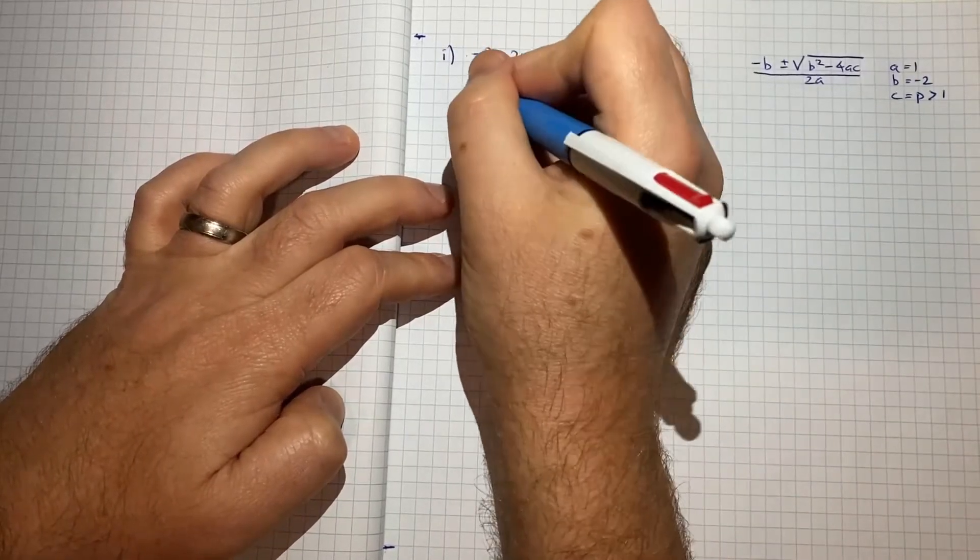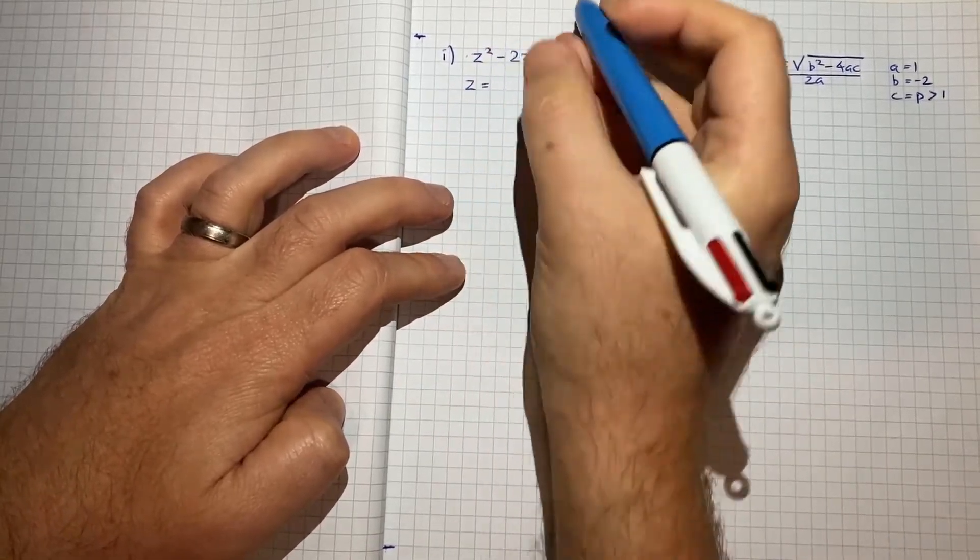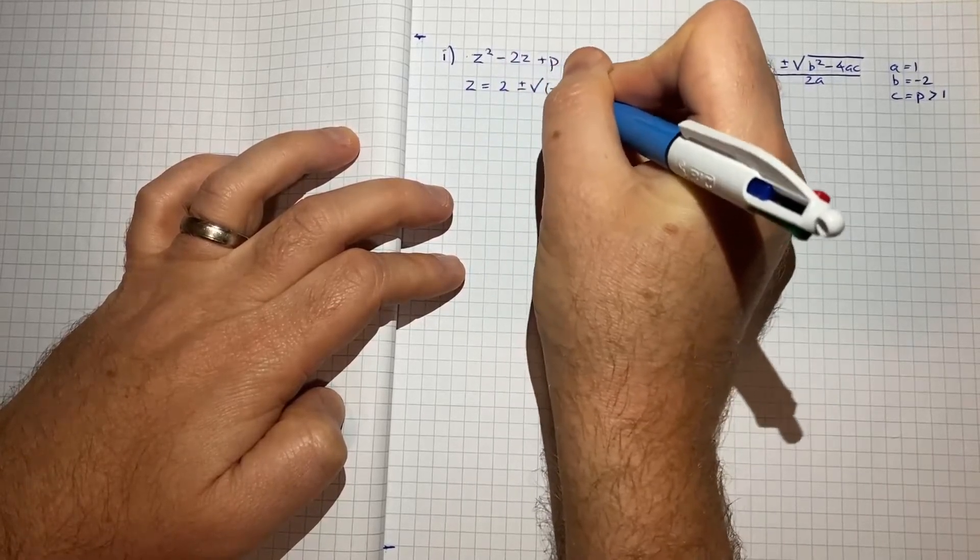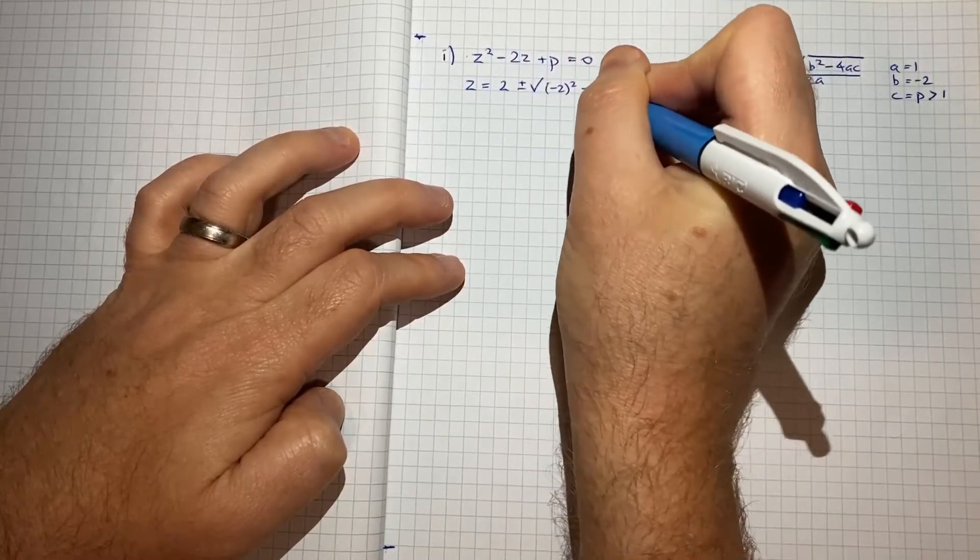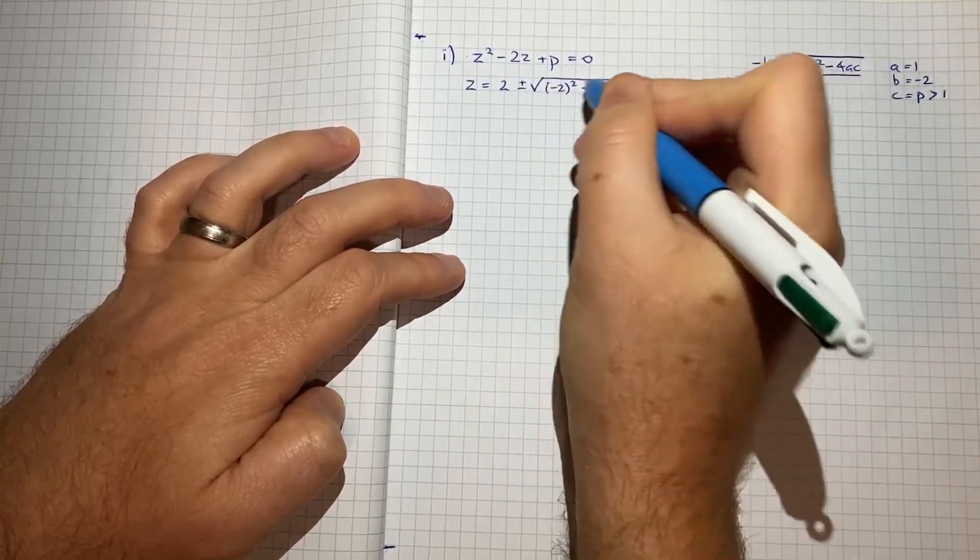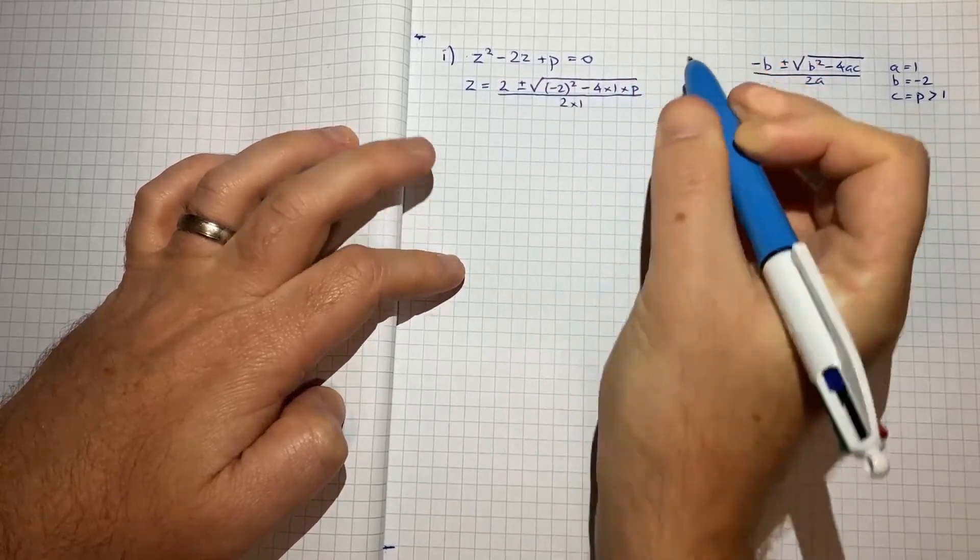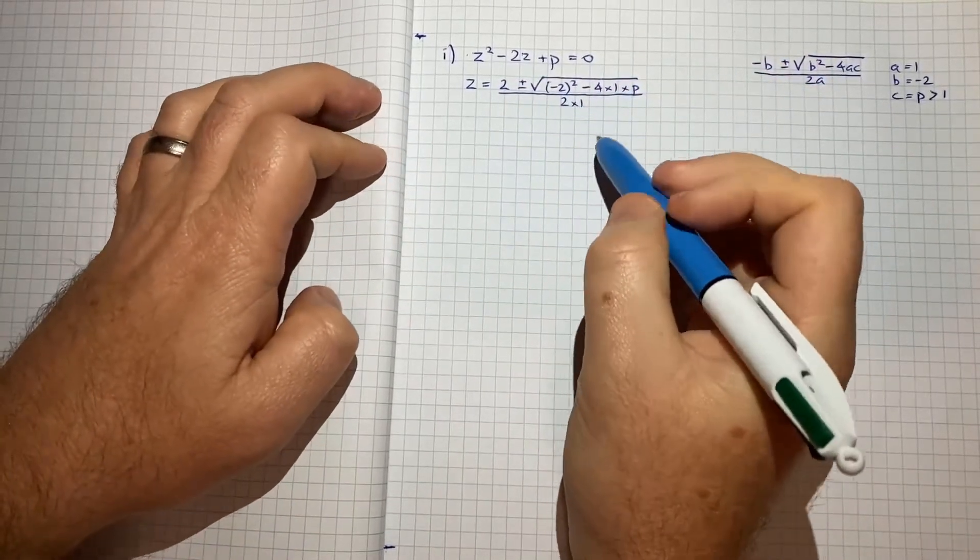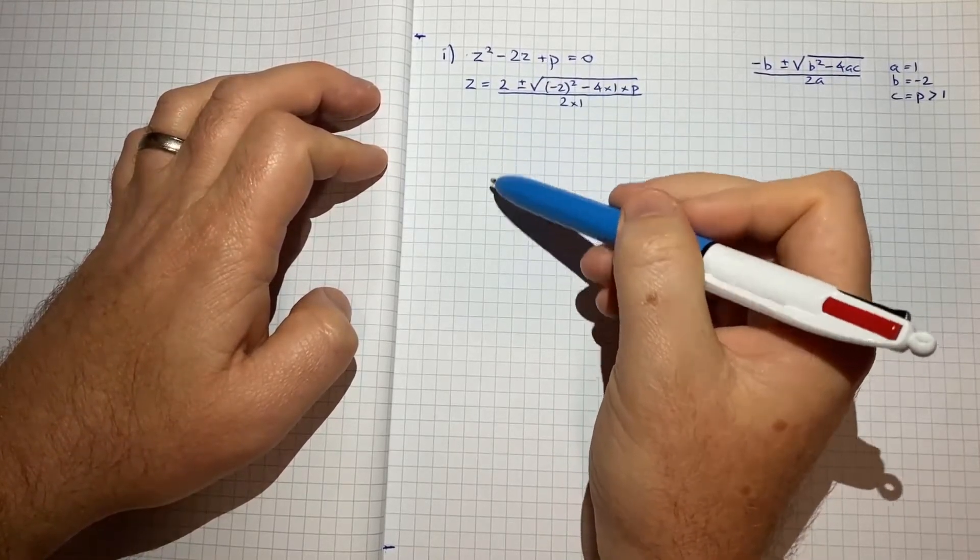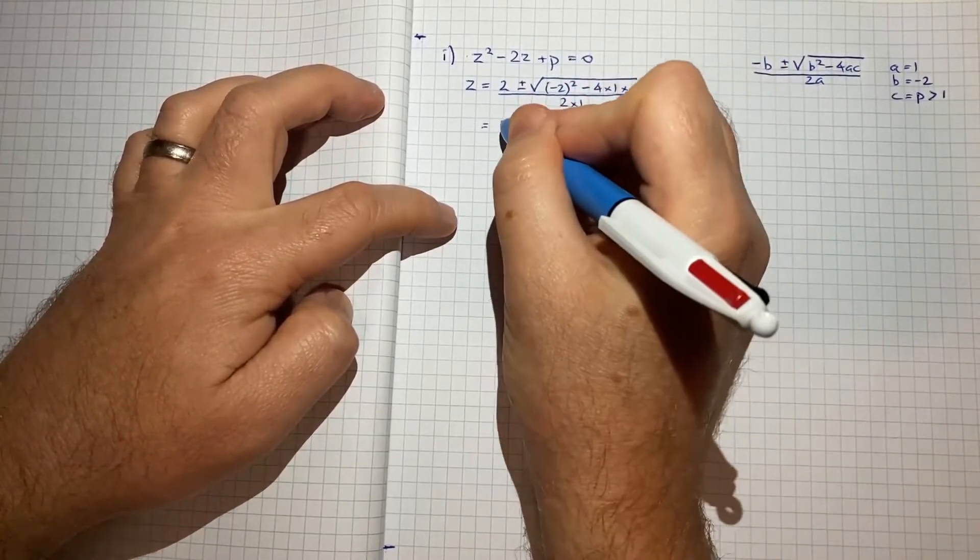So here we'll get z is equal to negative negative 2 or 2, plus or minus the square root of negative 2 squared, minus 4 times 1 times p, and all of that over 2 times 1. So I'll just work through the steps to simplify this. So I'll work through step by step just to make sure there's no mistakes and that you can follow along. So we'll do this one little step at a time.